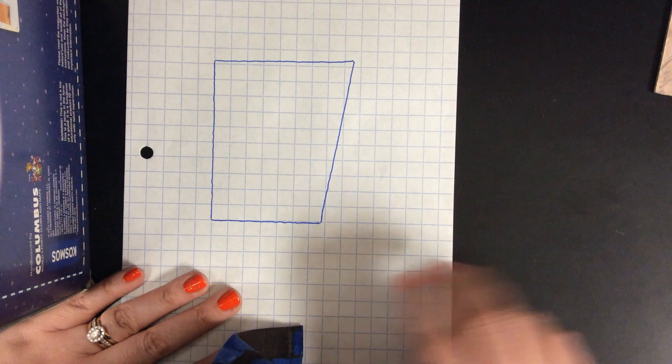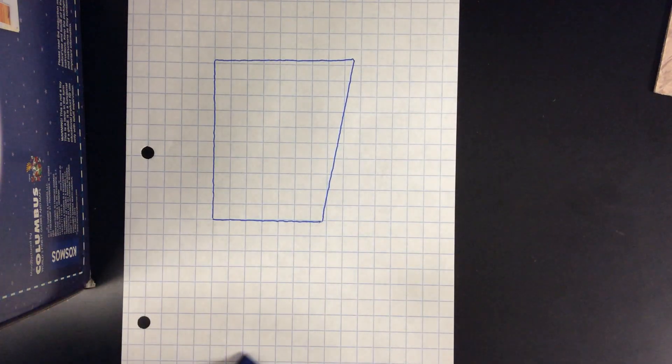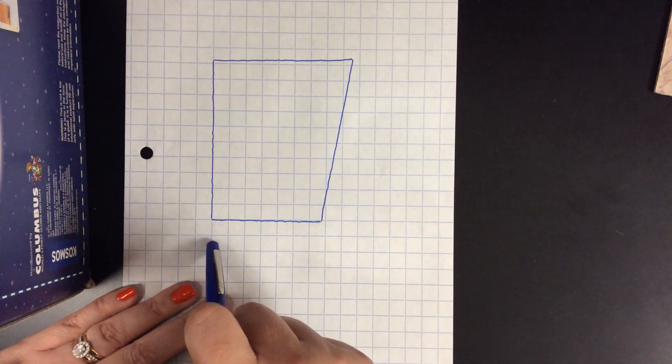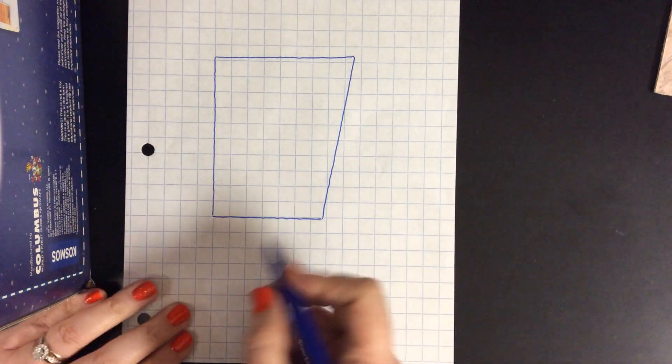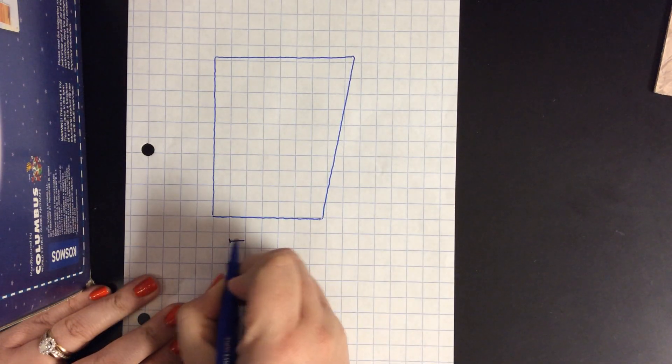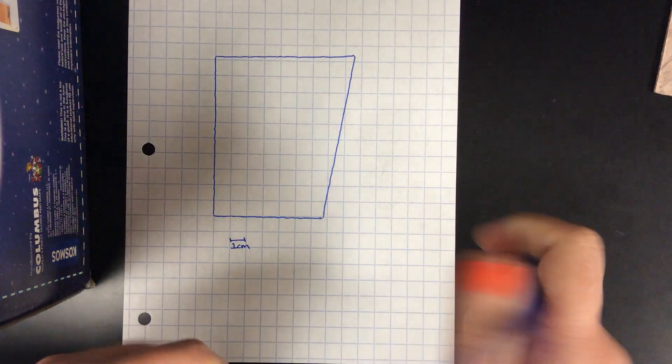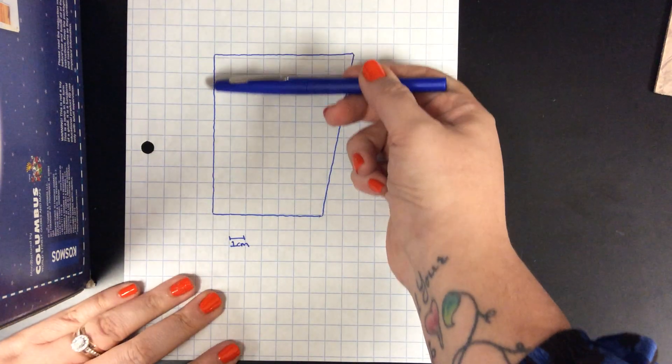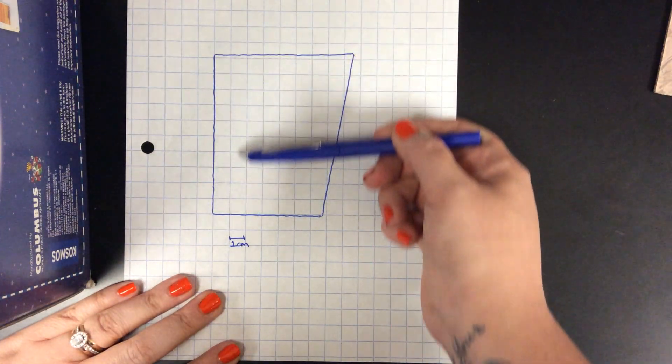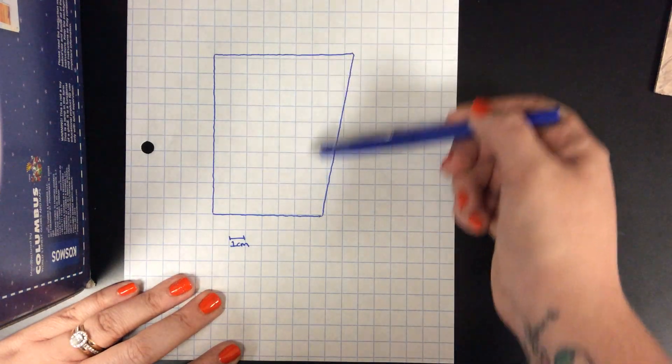Now you have two options. The slightly easier but definitely less accurate way is to take a piece of one centimeter graph paper, so each box is one centimeter, and just count the number of whole boxes inside the line that you just traced.